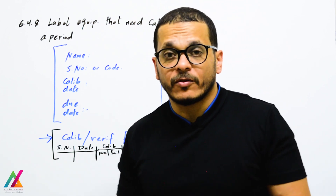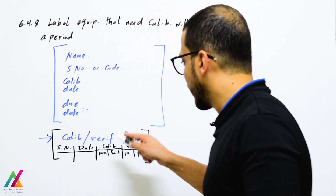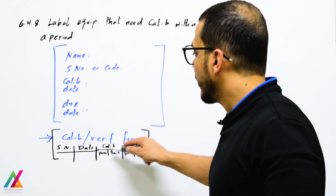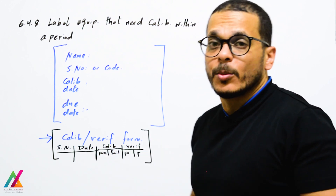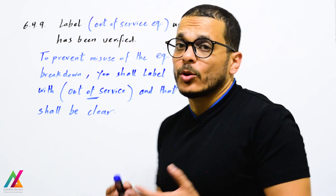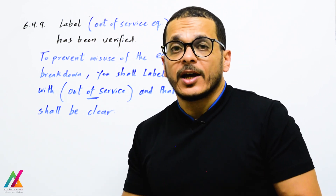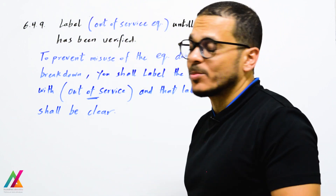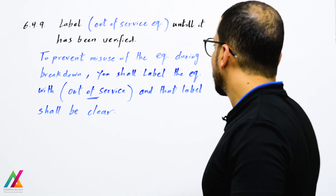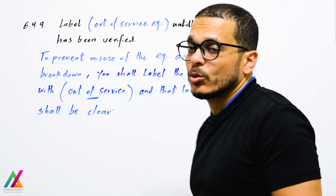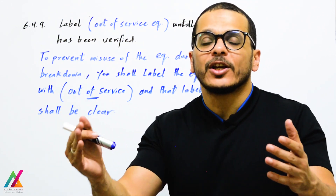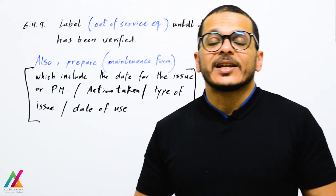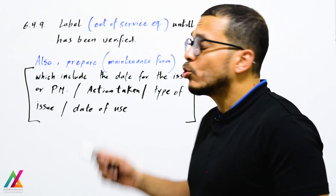Prepare a calibration and verification record form showing serial number, calibration date, verification date, and whether calibration and verification passed or failed. Equipment that is under maintenance or in breakdown shall be labeled 'Out of Service' until it has been verified — this prevents misuse during breakdown or maintenance. The 'Out of Service' label must be clearly visible to everyone.